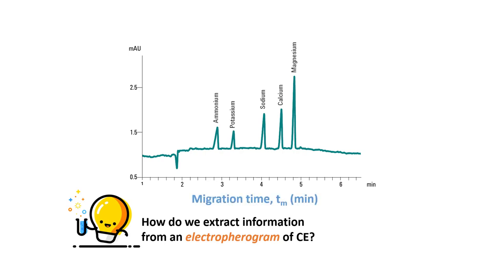The migration time, which is the x-axis. The absorbance, which is the y-axis. And the peak area — or more accurately, the corrected peak area — which is directly proportional to the concentration of individual analytes.